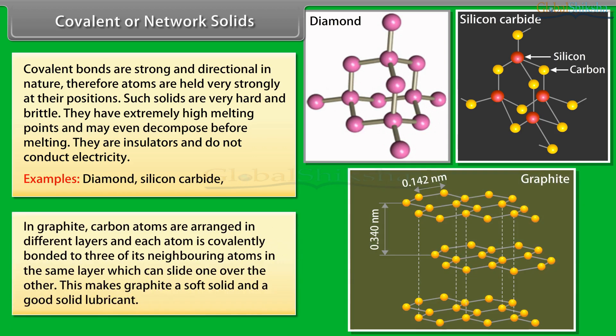In graphite, carbon atoms are arranged in different layers and each atom is covalently bonded to three of its neighboring atoms in the same layer which can slide one over the other. This makes graphite a soft solid and a good solid lubricant.